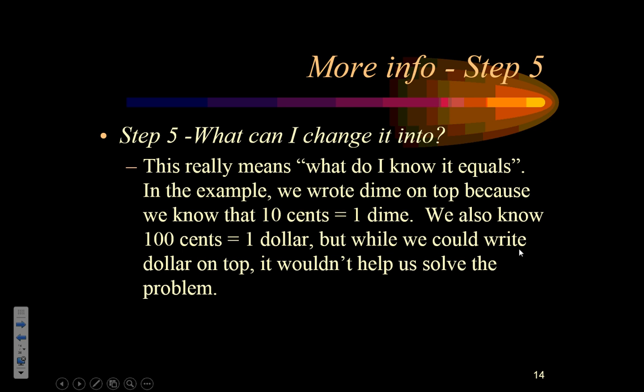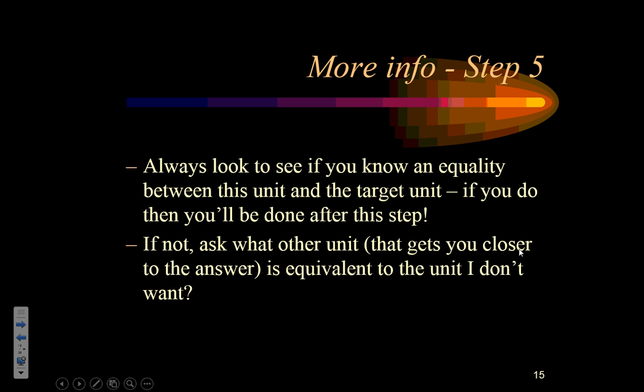Step five, what can I change it into? Remember, that really means, what do I know it equals? So in the example that we looked at, we wrote dime on top because we knew there's 10 cents equaling a dime. But we also knew a number of other things about pennies, including the fact that it equals a dollar. So any of them could have gone on top. The thing is, they wouldn't have gotten us necessarily closer to solving the problem asked. Next thing, always look to see if you know an equality between the unit you're getting rid of and the target unit. Don't forget to look ahead. That's why we put the target there first so we know where we're trying to get. So if I'm canceling out cents and I want dimes, I realize, oh, I know how many cents equal how many dimes. So I put dimes on top and I'm going to be done after that step.